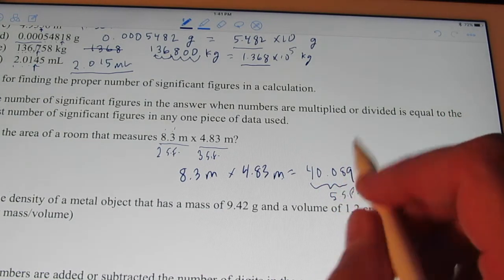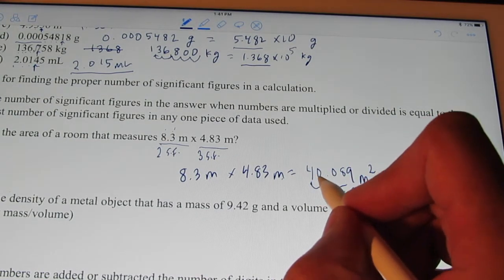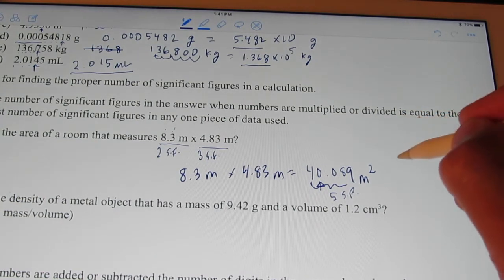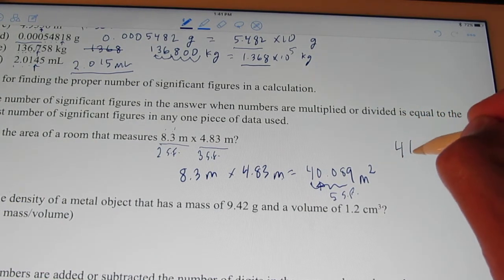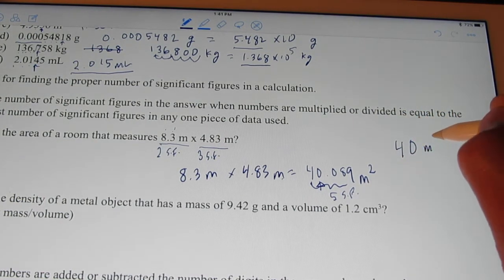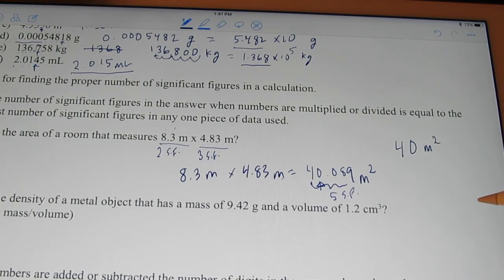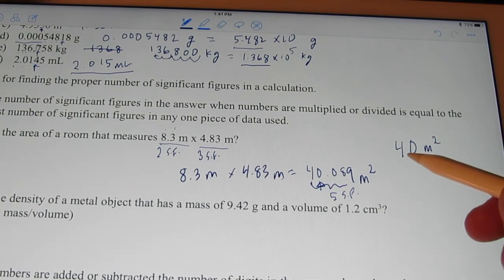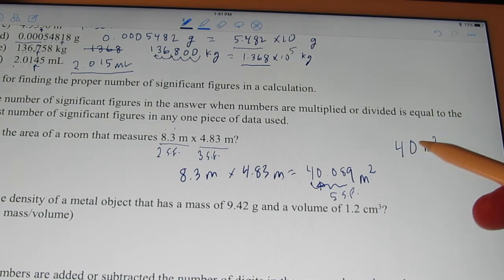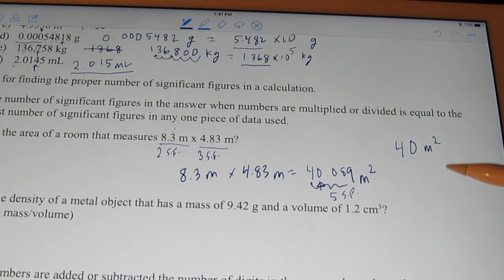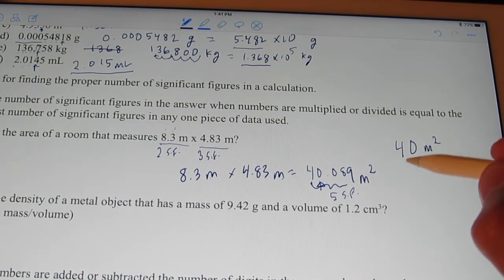So I count over two digits from the left. One, two. So I have to round right there. So many students would say, okay, Hummer, the answer is 40 square meters. And I have a problem with that because remember, can't we write this as 4 times 10 to the first? In other words, we can get rid of that zero. It's not necessary. It's not significant.